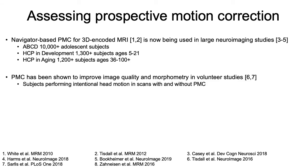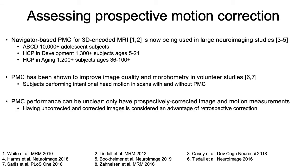Prospective motion correction has been shown to improve image quality and morphometry in volunteer studies where subjects performed intentional head motion in scans with and without prospective motion correction. But PMC performance can be unclear when we only have the prospectively corrected image and the motion measurements. Having the uncorrected and corrected images is often considered an advantage of retrospective correction.